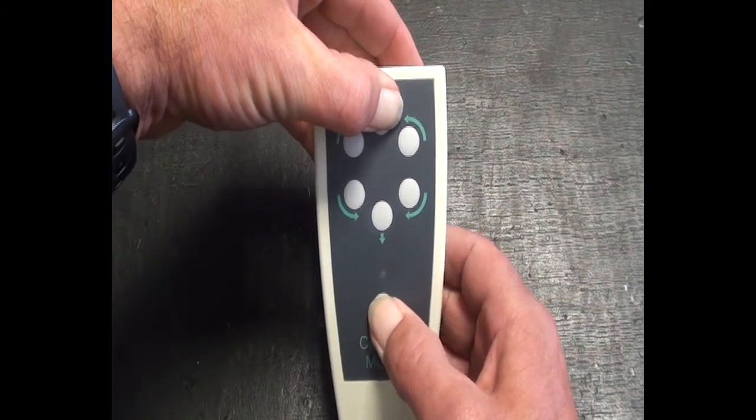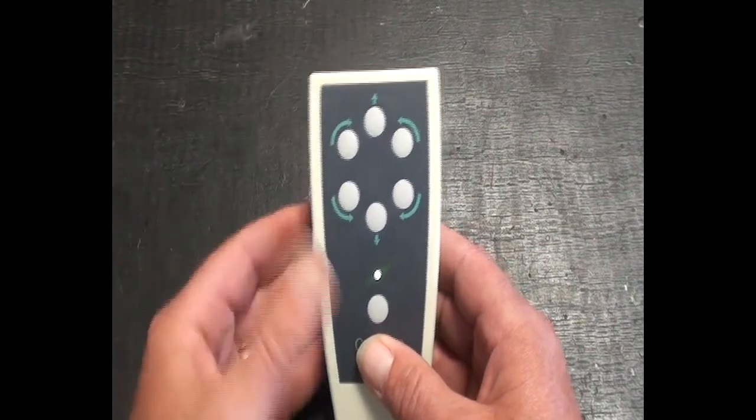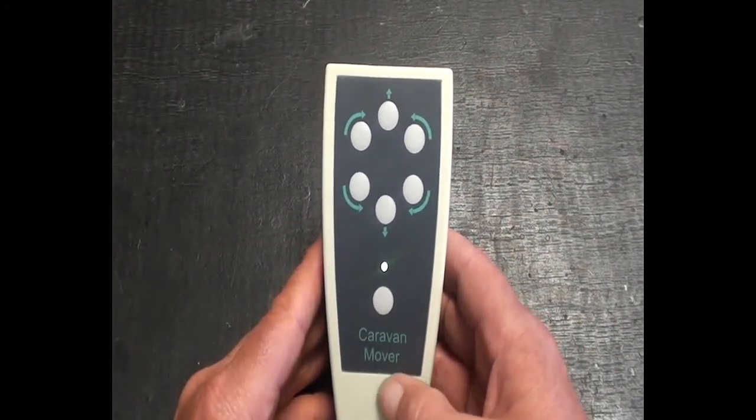So one flash, two flashes, three flashes. We release the top button and the handset is now set up for three flashes.